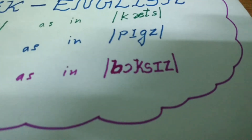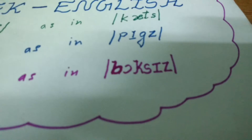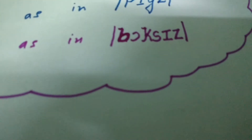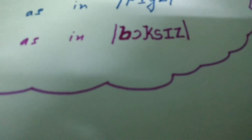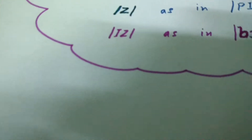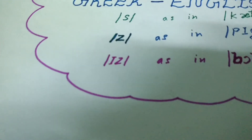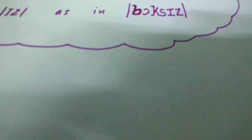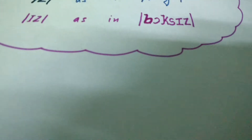Sometimes we also find a zero-morph. For example, three forms of the verb 'cut' are cut, cut, cut — and similarly 'shut, shut, shut.' These irregular forms where no morpheme is added are known as zero-morph.